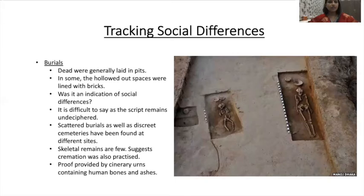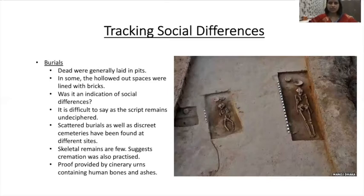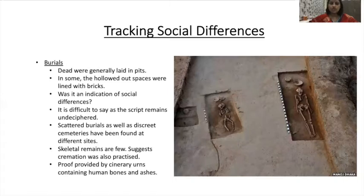The second indicator is burials. The dead were generally laid in pits; in some cases the hollowed-out spaces were lined with bricks. It is difficult to say whether this indicates social differences, as the script remains undeciphered. When writing about Harappan topics, you must use words like 'probably' or 'maybe' because we cannot say anything for sure. Scattered burials as well as discrete cemeteries have been found at different sites. Skeletal remains are few, suggesting cremation was also practiced, with proof from funerary urns containing human bones and ashes.